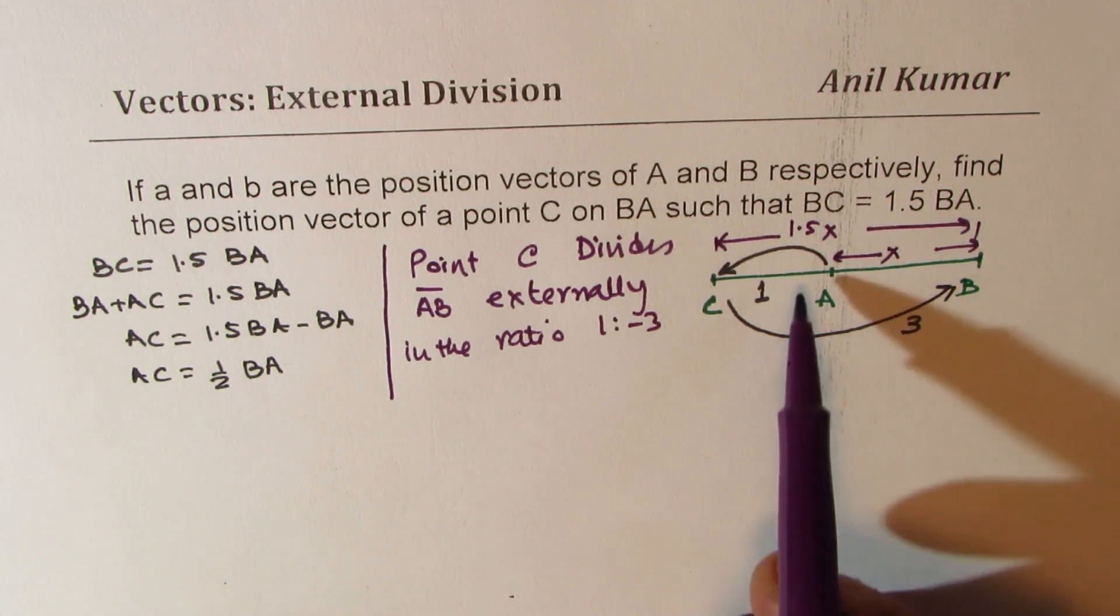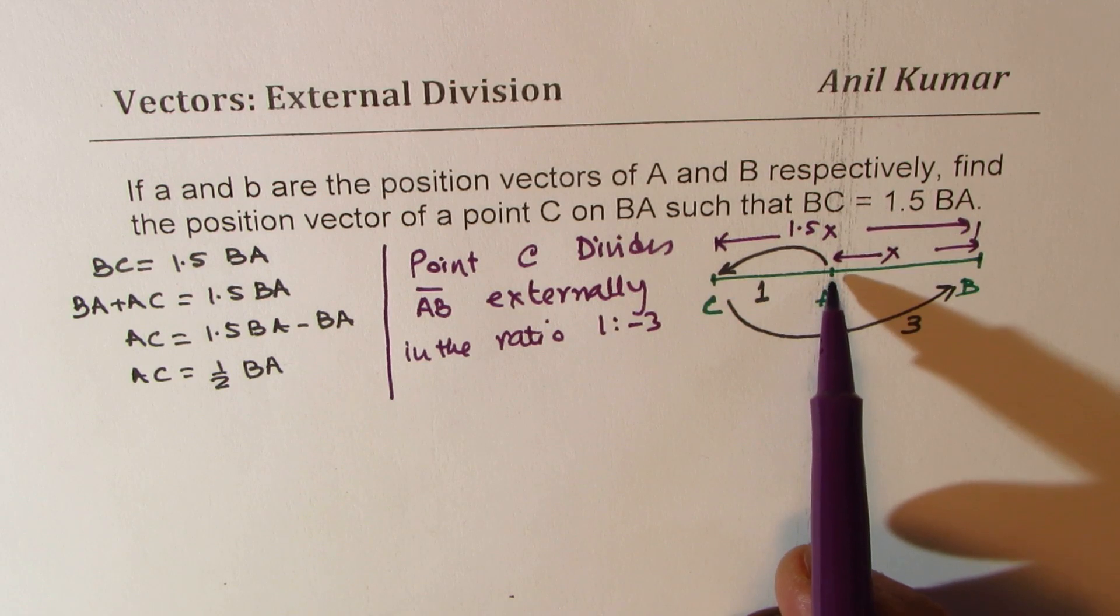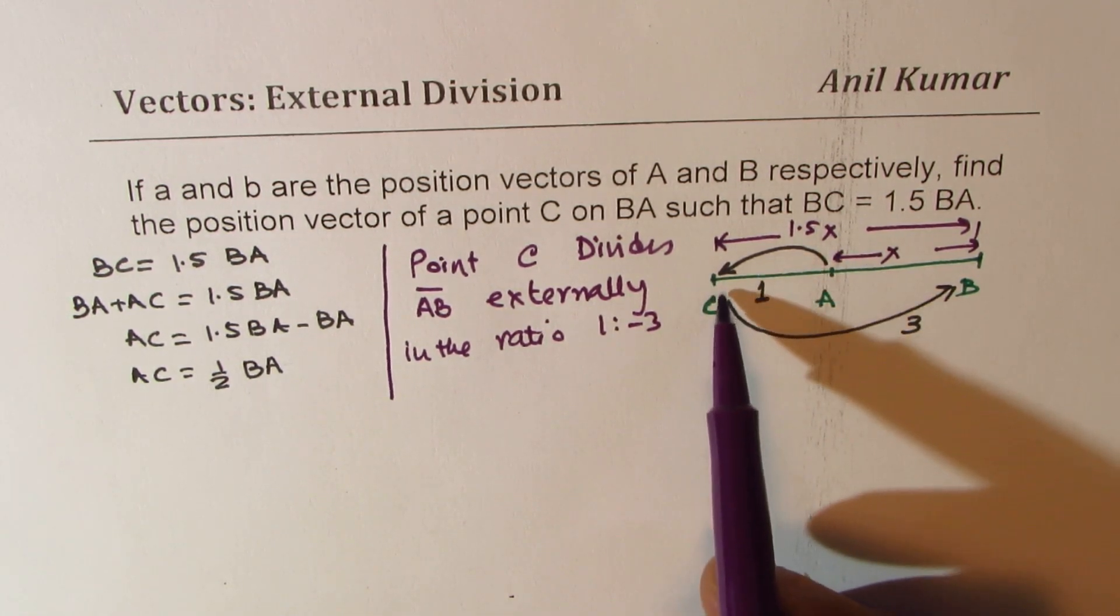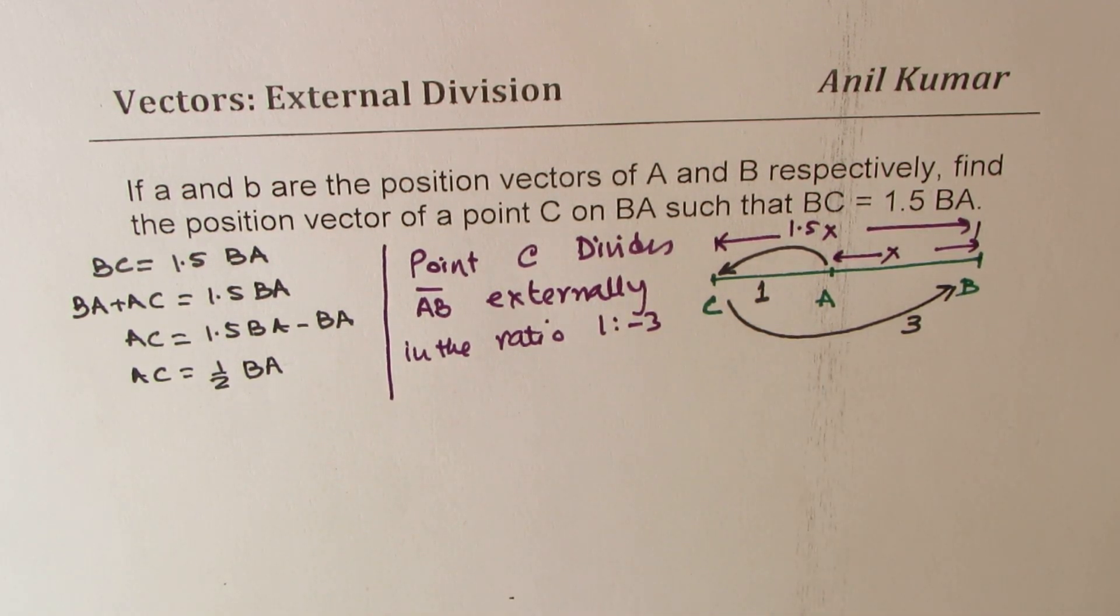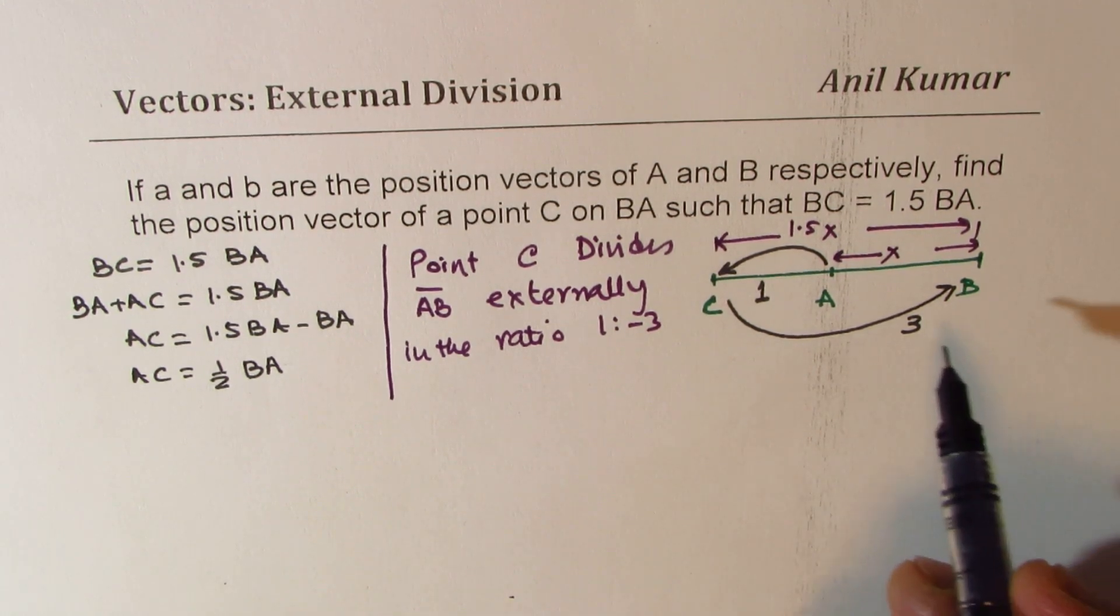So since C is on this side, A to C, if you are taking this side as positive, then going to the other way will be considered as negative. So that is how we could see it as an external division. Now you can use the section formulas for external division to find the coordinates of point C.